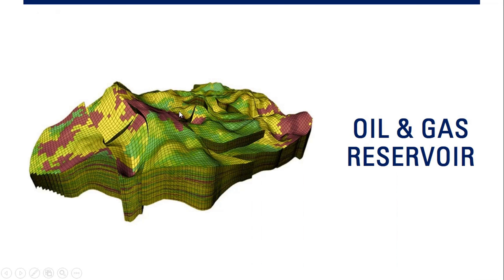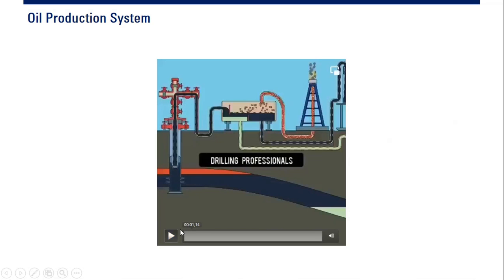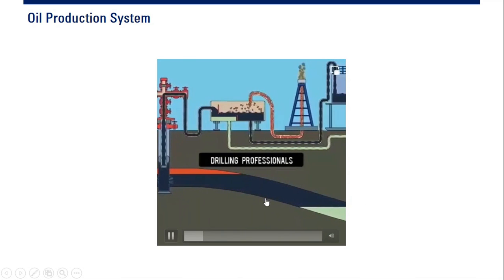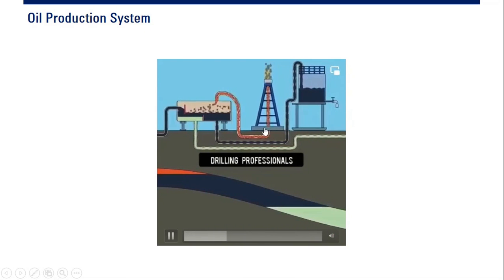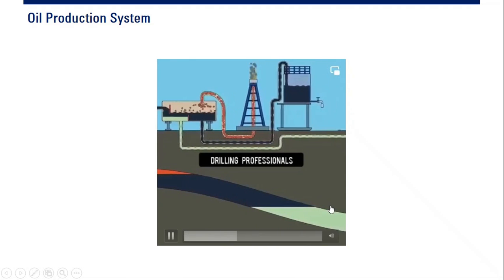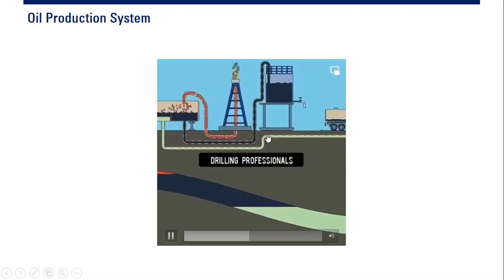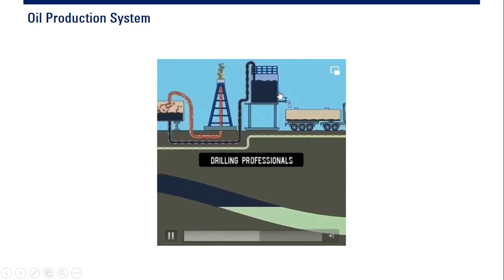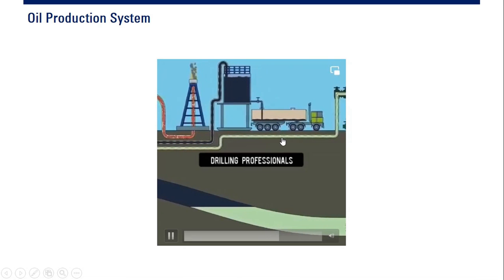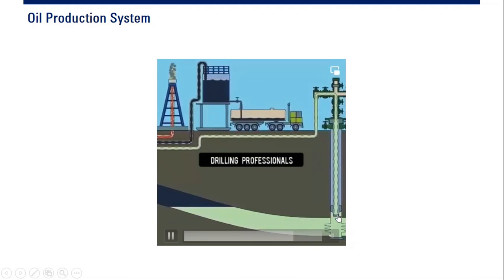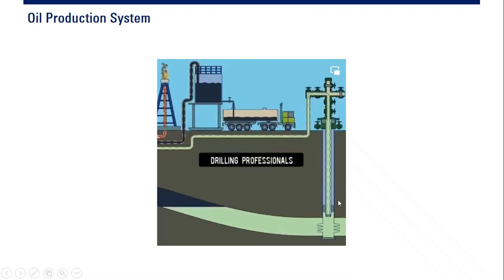Our first class is about introduction to oil and gas reservoir. This is the oil production system. You already know that we have oil from the reservoir flow through the well, and to separator. The gas will be burned in flare, and the oil will be stored in the tank. The oil will be delivered to tank or through pipeline, and the water will be injected back into the reservoir for pressure maintenance or for water flood. So this will be the background of our topic today — the reservoir.